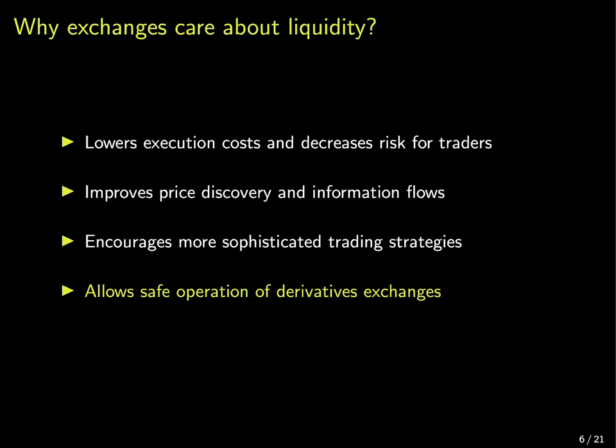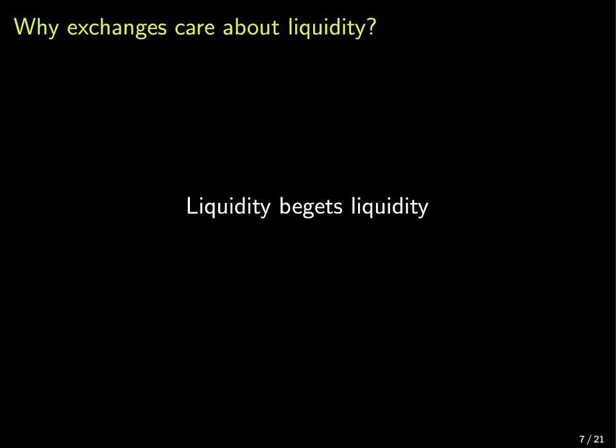But for derivatives exchanges, liquidity is crucial for a safe operation of such a venue — and I mean derivatives in the broadest sense, so any sort of margin trading. A trader unable to meet the margin obligations can only be removed if there's sufficient volume on the order book so that his position can be offloaded to a different participant, thus securing the interests of his original counterparty. All of those considerations contribute to a safer and more efficient operation of a trading venue, which in turn brings more trading activity to it, which increases liquidity even further.